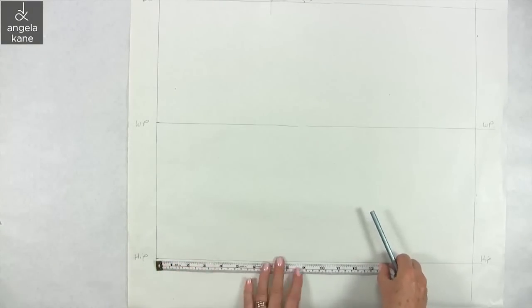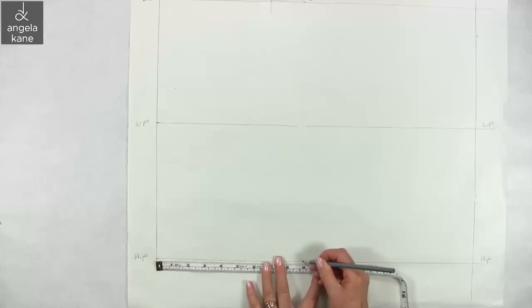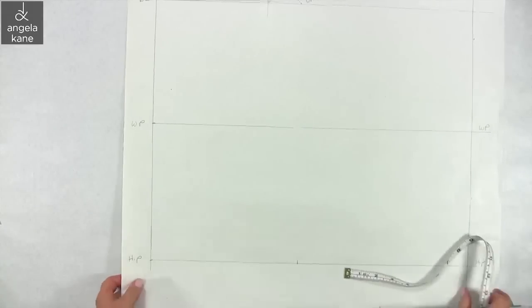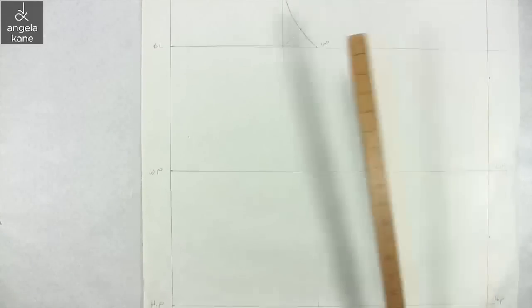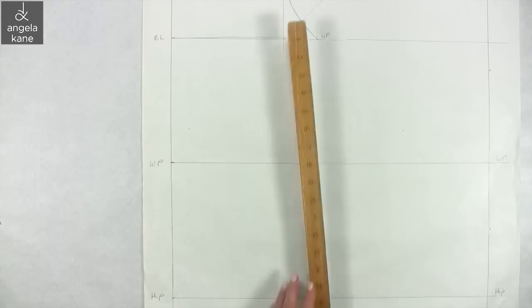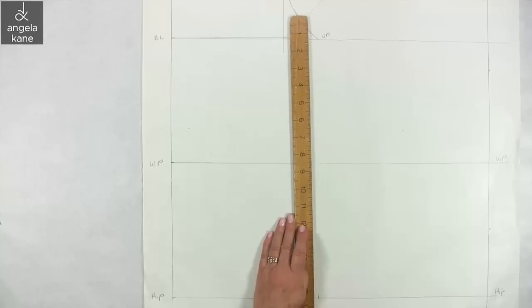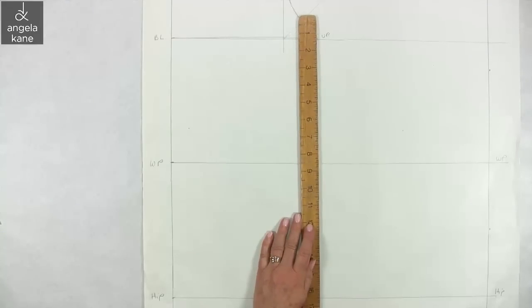So continue, measure out a quarter hip measurement for the hip point. Draw a straight line from UP to HP.